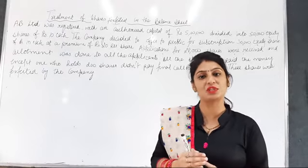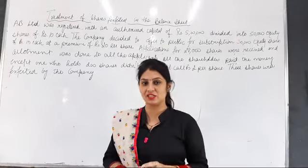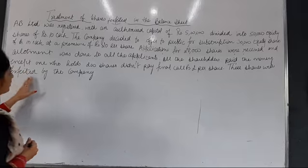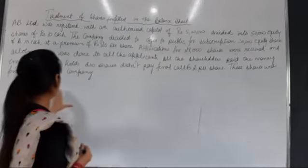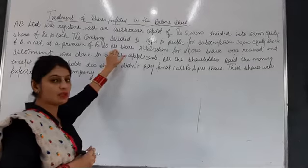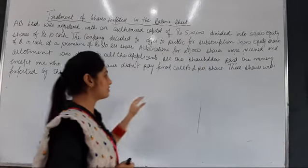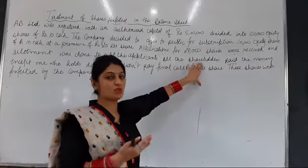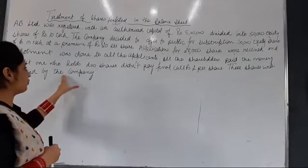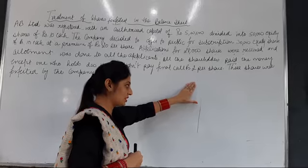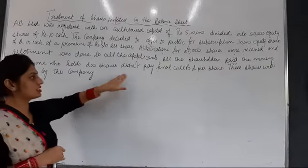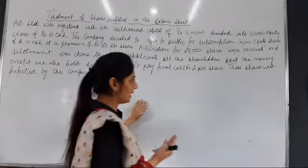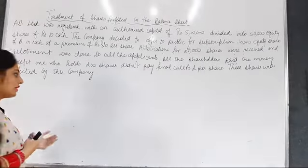Ab uske baad agar company usko dobara kisi ko issue karegi, hum usko bolte hain reissue. So abhi is example mein karenge how to show share forfeited in the balance sheet of the company. The company was registered with authorized capital of rupees 5 lakh divided into 50,000 equity shares of rupees 10 each. The company decided to offer to public 30,000 equity shares of rupees 10 each at a premium of 20 per share. Applications for 28,000 shares were received and allotment was done to all applicants — no application was rejected. All shareholders paid the money except one who held 200 shares and didn't pay the final call of rupees 2 per share. Usne 8 pay kar diye lekin last call he was not able to pay. These shares were forfeited by the company.